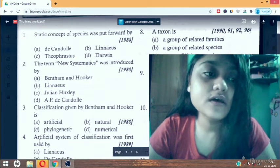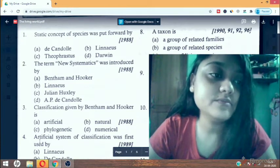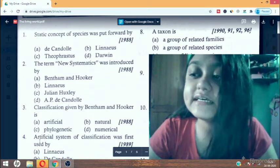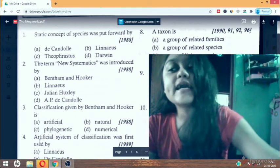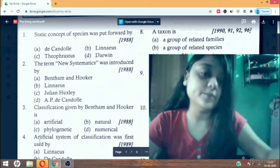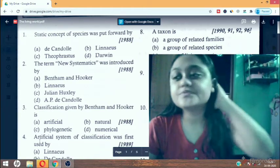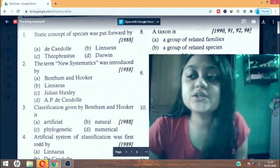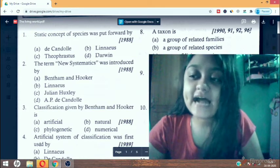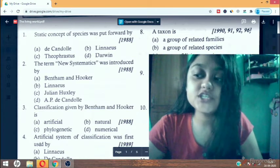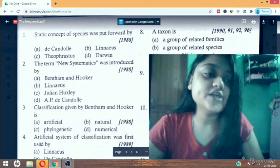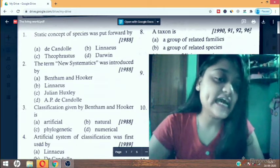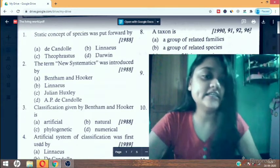Second question: the term new systematics was introduced by. This comes in AIPMTI think, 1988.